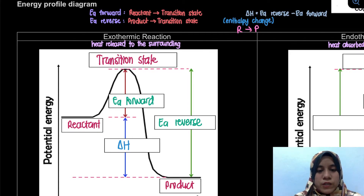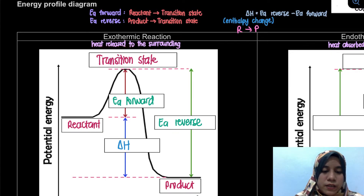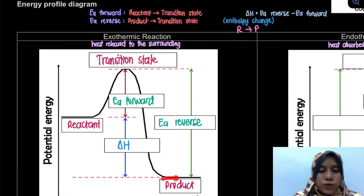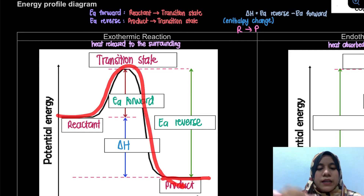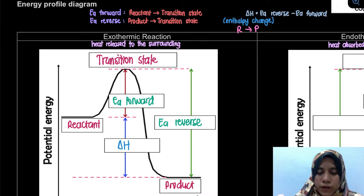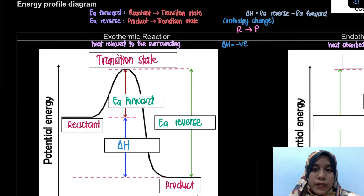This is the exothermic reaction diagram. For exothermic reactions, heat is released to the surroundings. At the start, energy is higher because heat is still in the system; once it is released, the energy is lower. That's why the product energy level is lower than the reactant — the transition state is the highest point. For exothermic reaction, delta H will be negative.